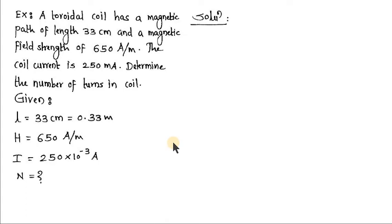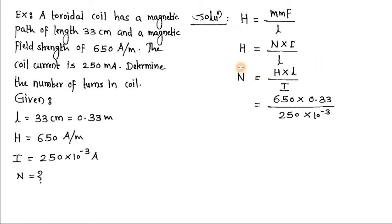We know magnetic field strength H can be given as MMF upon length. In the formula of MMF, we have number of turns, so MMF = N × I. In this formula, all other three quantities are known except N, so we will substitute those values to get the number of turns.